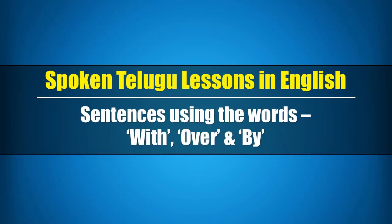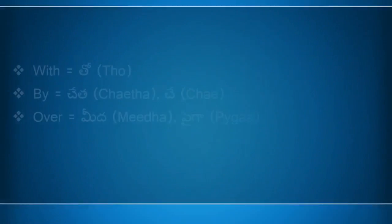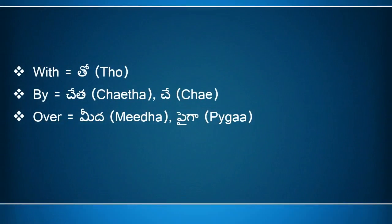Hi, this lesson name is sentences using the words 'with,' 'over,' and 'by.' Basically, 'with' means 'to,' 'by' means 'cheta' or 'che,' and 'over' means 'mida' or 'paiga.' But when we use these words in a sentence, the meaning may be different. Let us see some examples.